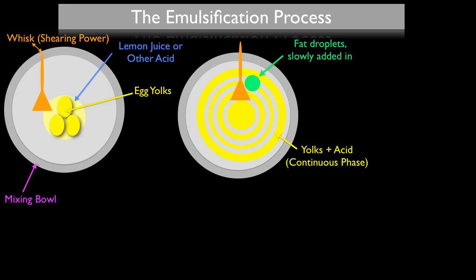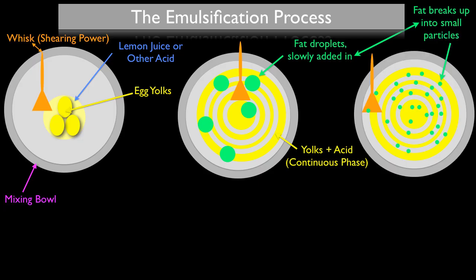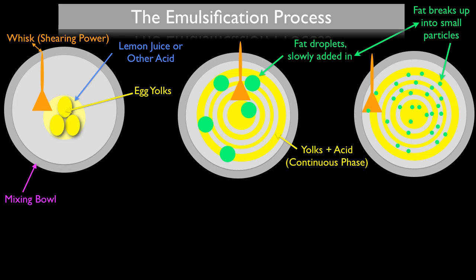As you start to continue to whisk around the bowl you can add a couple more drops here and there as they start to incorporate, and eventually the fat will break up into smaller particles. Once you get the fat dispersed and your emulsification is going — and the way that you know that it's dispersed is number one it's going to come together, and also you're going to notice that the emulsification will start to thicken slightly — at this stage you're going to have a bunch of little fat particles dispersed throughout your continuous phase.